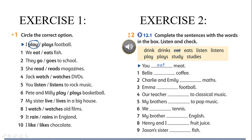Exercise two: complete the sentences with the words in the box. Put the words into the correct sentence. For example, with 'coffee' and the subject 'Bella' — Bella is a girl, a singular noun — so we say 'Bella drinks coffee'. For number two: Charlie and Emily — two people — with the subject 'maths', we choose 'study', not 'studies', because there are two people.